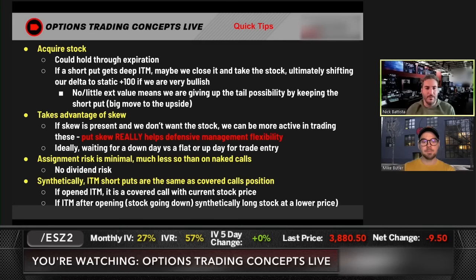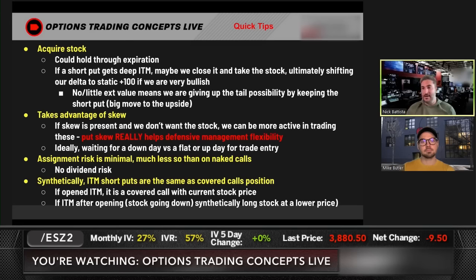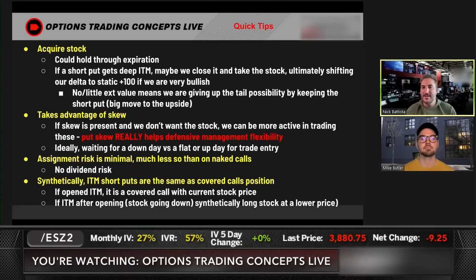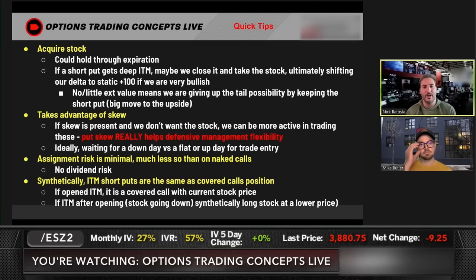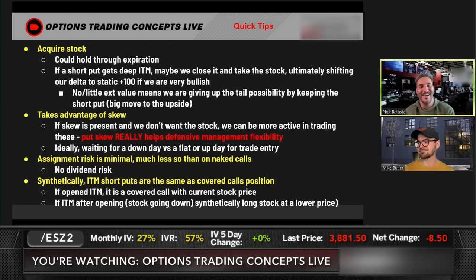Assignment risk is minimal on naked puts — there's no dividend risk, which is the main factor that goes into early assignment. You can get assigned early on an option close to expiration like the weekly, which loses extrinsic value faster. But if you're trading something 40 days out and you're in the money in the next 10 days, you're very likely not going to be assigned because there's always going to be extrinsic value. We did a full segment called 'Watch This Before Worrying About Assignment.'